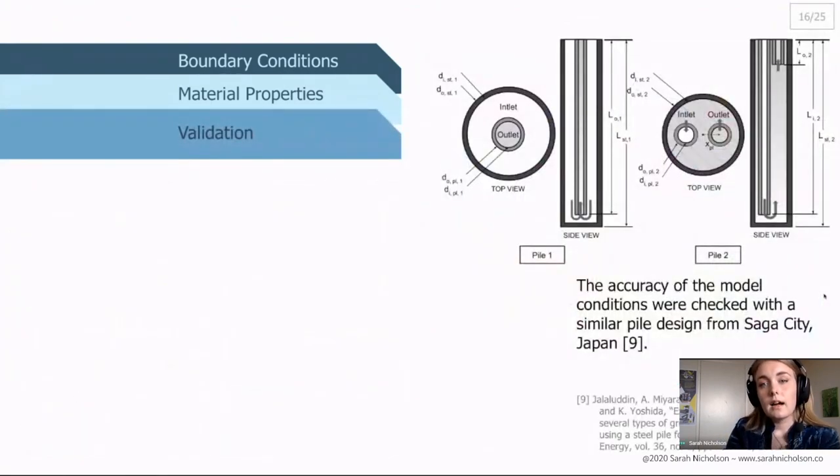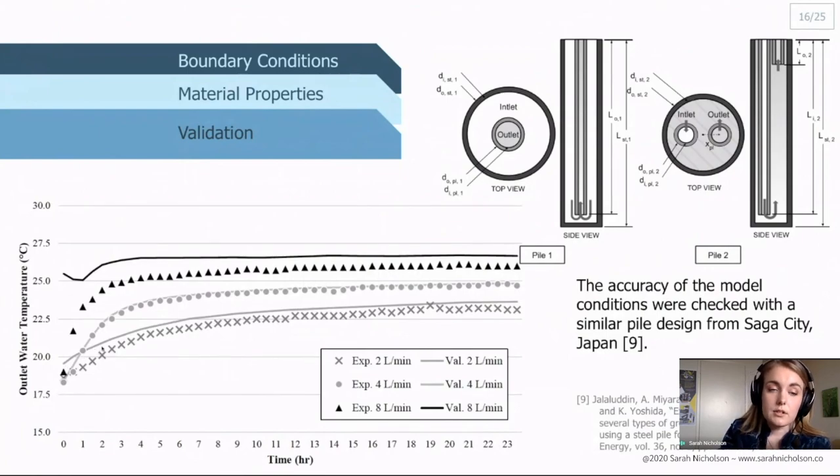To validate this model I recreated using COMSOL and the same boundary conditions this model here, Pile 1, from a study done in Saga City, Japan. This model then we ran a transient simulation and I validated for the outlet water temperature. So outlet water temperature over time, this is the model in the solid lines compared with their experimental collected data. It has quite good agreement between the experimental and the computational model.